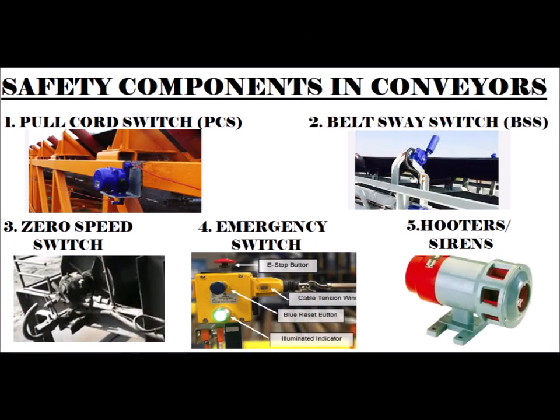Now we will start with the 5 safety components. In this slide you can see: first, pull cord switch; second, belt sway switch; third, zero speed switch; fourth, emergency switch; and fifth, siren. The fourth and fifth are common safety equipment used in other applications as well.